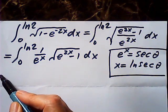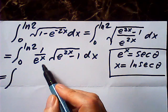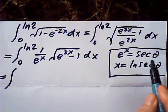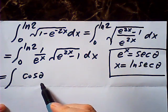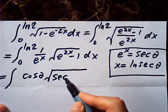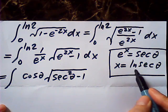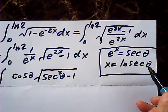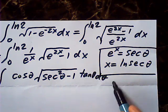Then our integral becomes: 1 over secant is cosine, times the square root of secant squared theta minus 1. And dx would be the derivative of log secant with respect to theta, which is tangent theta d theta.